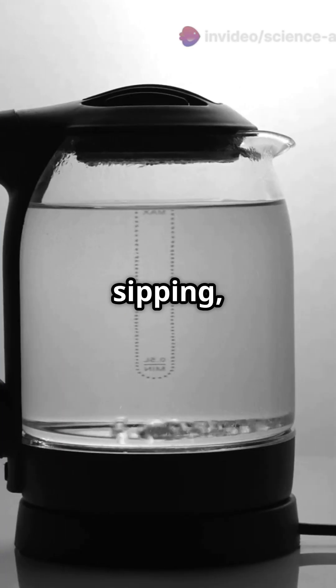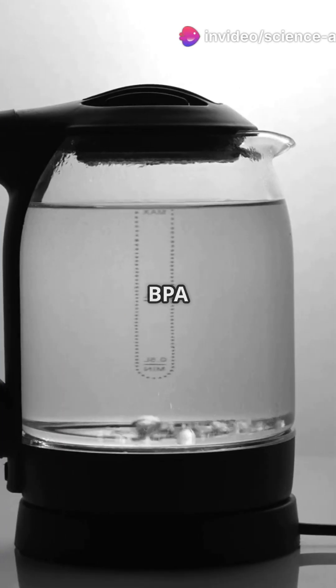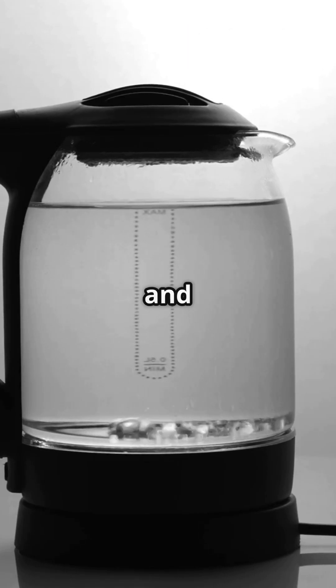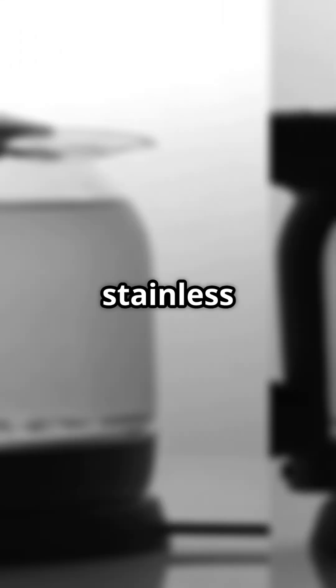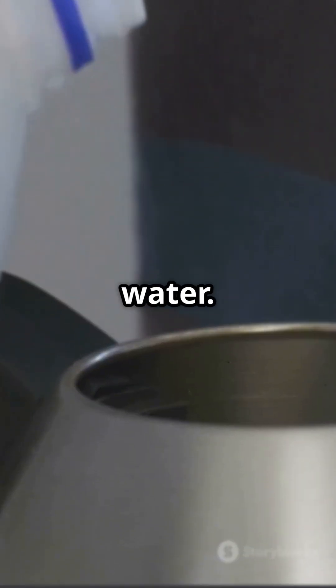So for safe sipping, stick with kettles that are labeled BPA-free. BPA is a chemical sometimes found in plastics, and it can get into your water and isn't good for your health. Stainless steel or glass kettles are better for your health, and don't keep reboiling the same water.